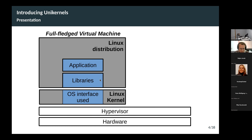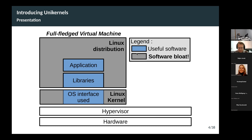This is a very typical cloud deployment scenario. One observation is that you just want to run a single application — a web server — and you end up running a lot of software that is absolutely not useful for this application. We call this software bloat. If you look at the Linux distribution, you have a lot of libraries installed, a lot of daemons running in the background, a lot of stuff that is absolutely not needed for Apache.